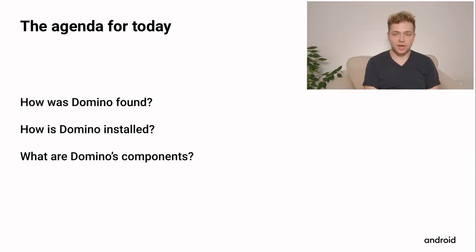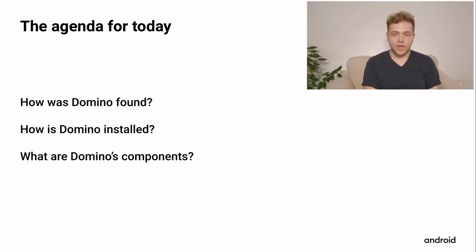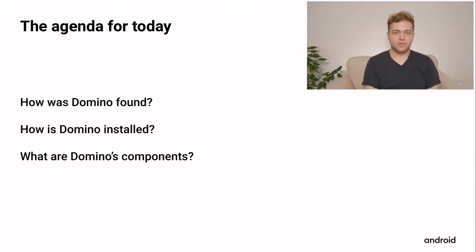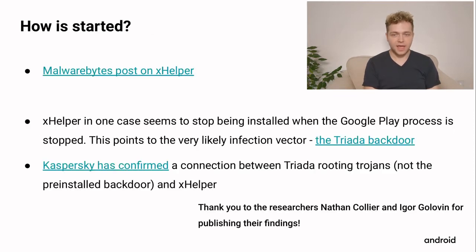We will start with how Domino was found and discovered, then look at how it was installed on devices and what its components are. These three questions are the questions every malware researcher has to ask at some point — whatever kind of malware you're looking into, whether Windows, Android, or something else. You need a lead, find out how it got installed, and then what it's doing and what the components are. So let's start.